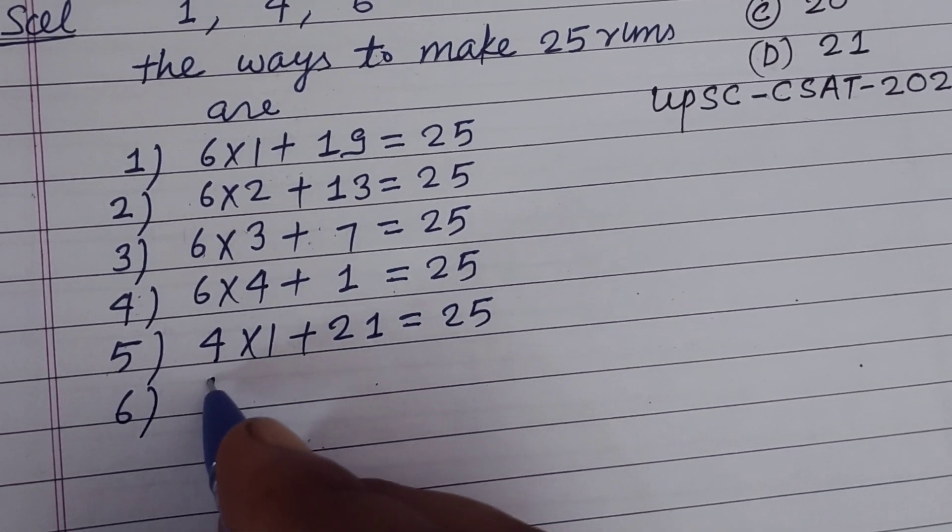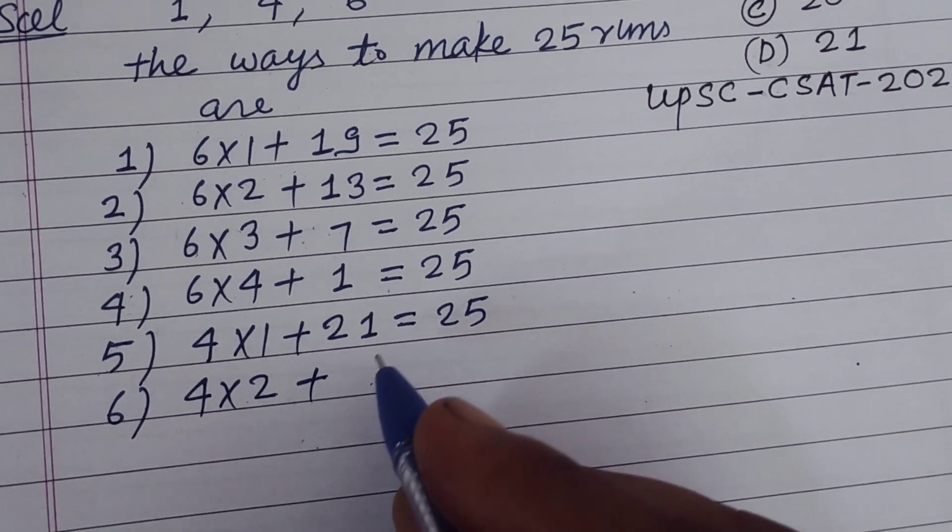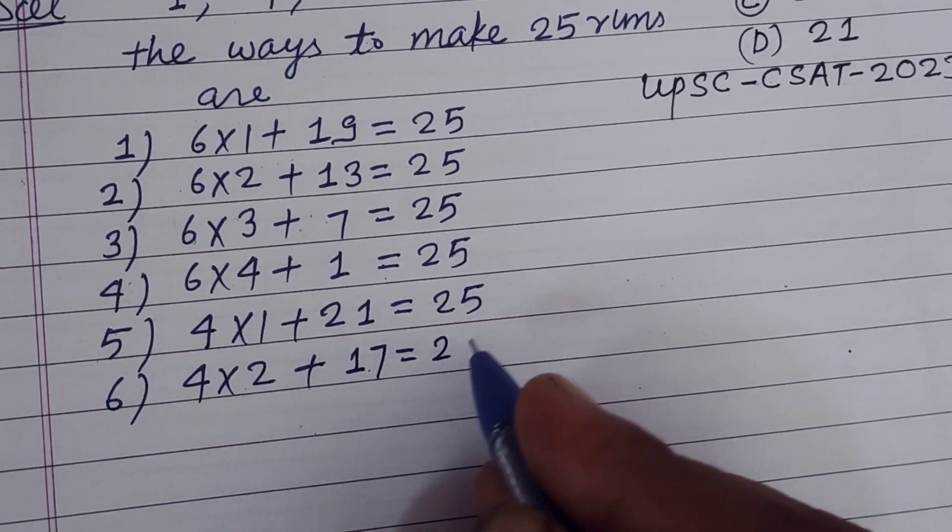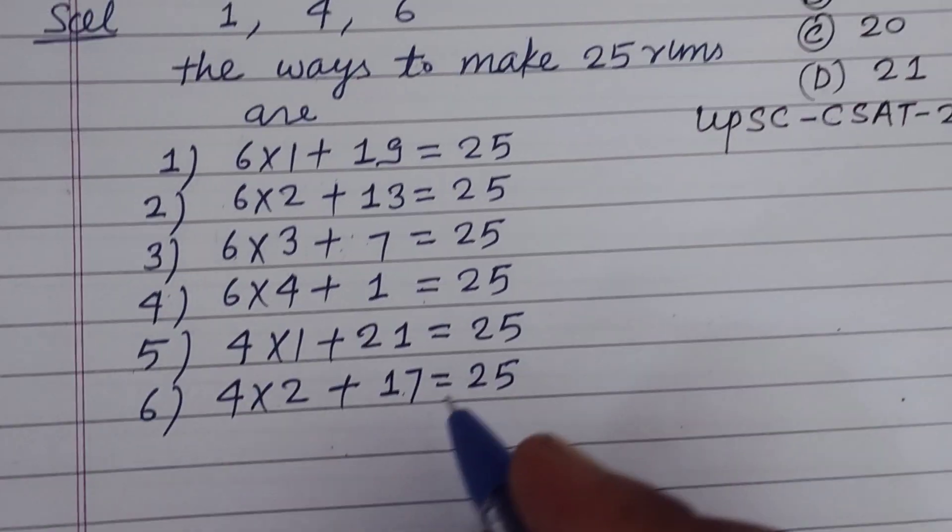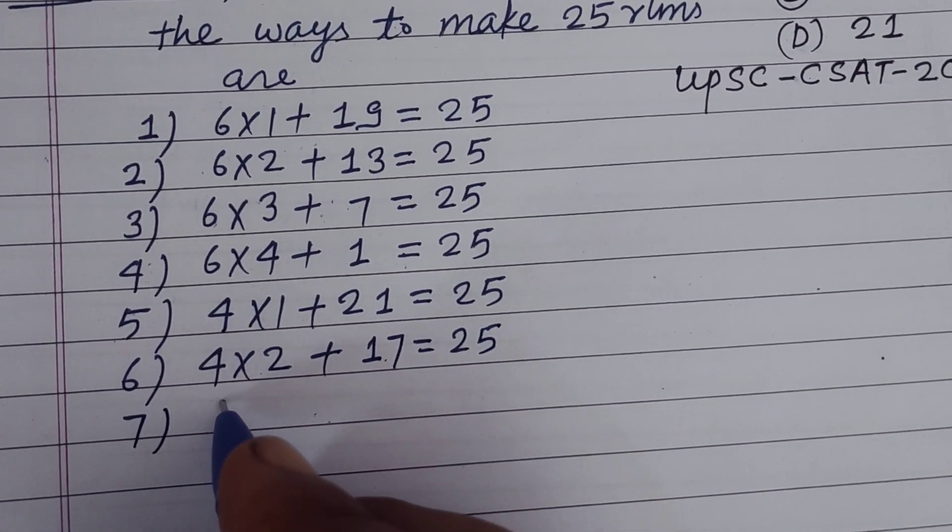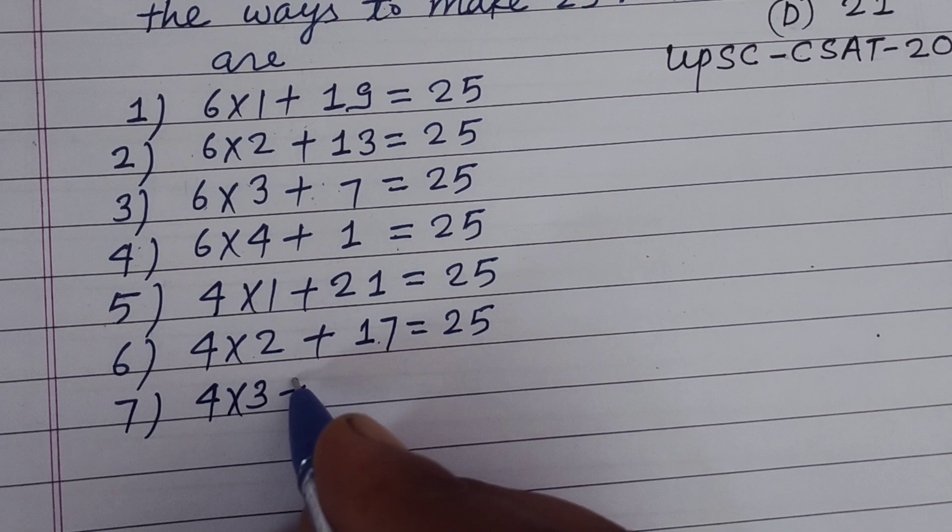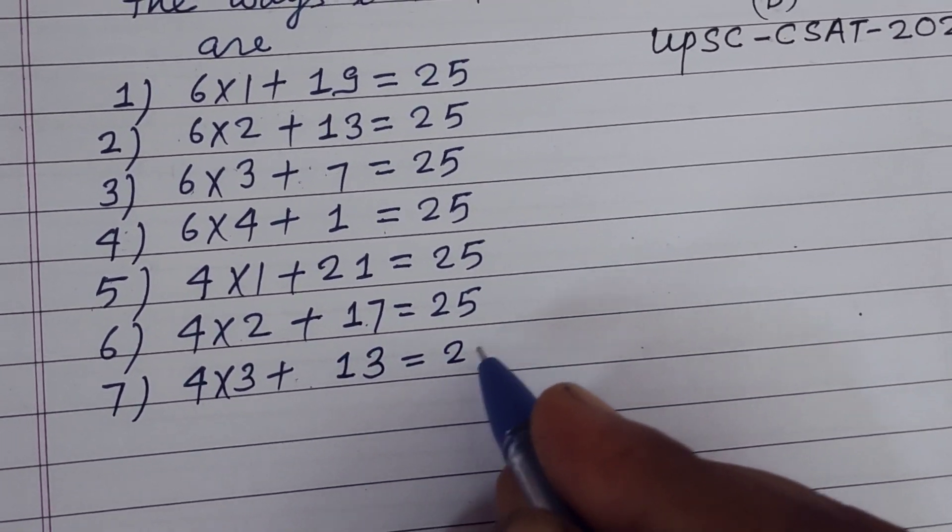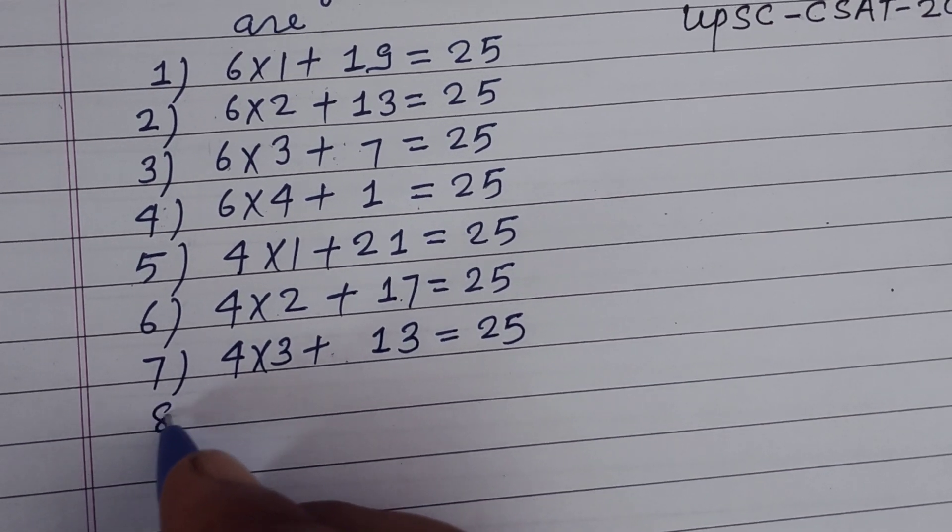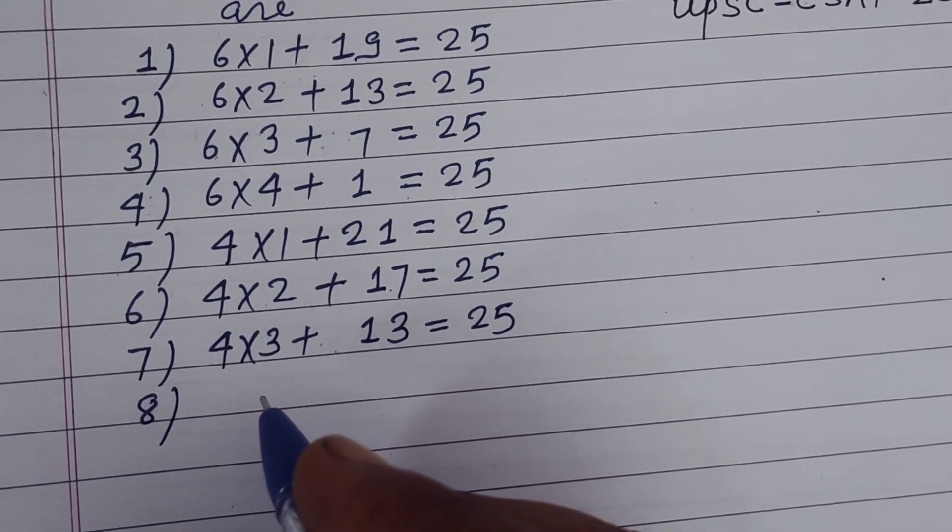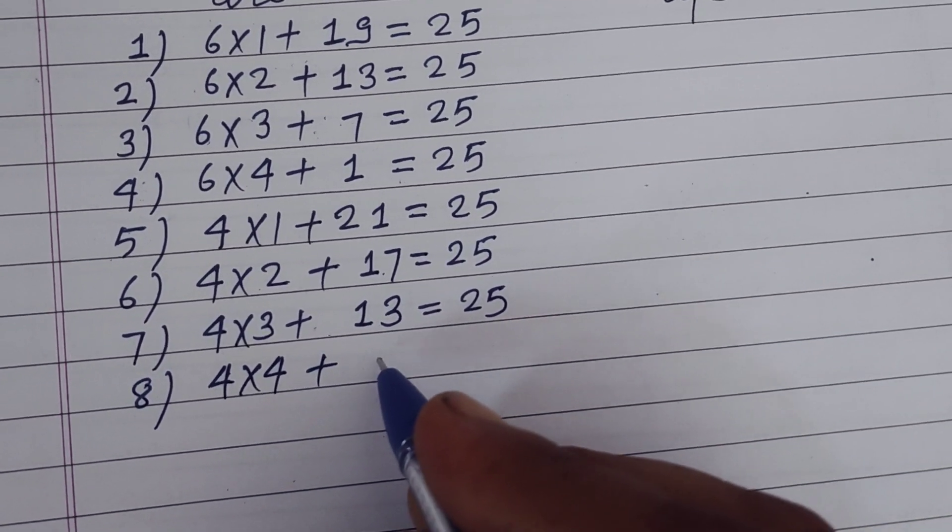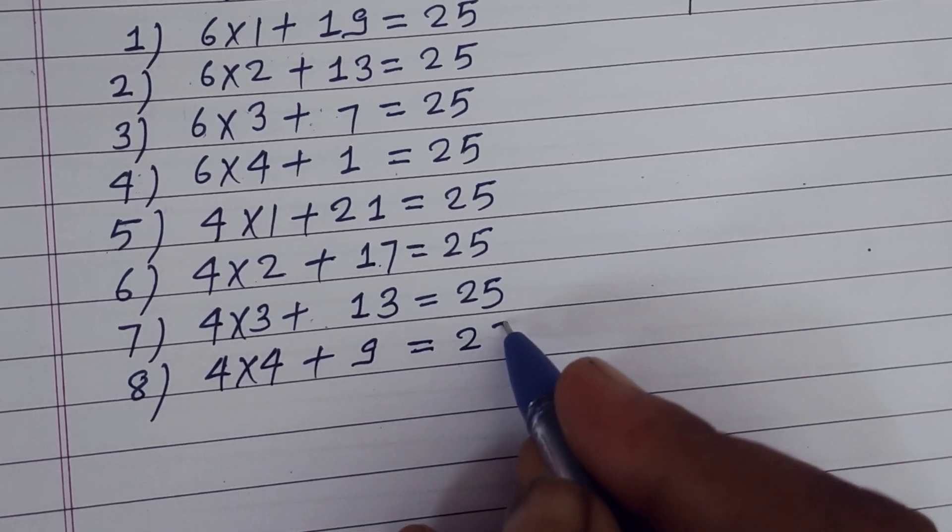Sixth condition, 2 fours plus 17 runs, this is 25. Ninth condition is when he takes 5 fours, this is 25.